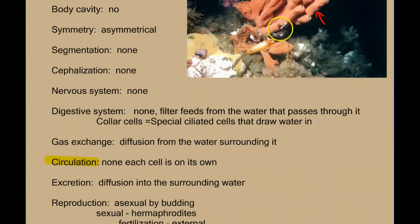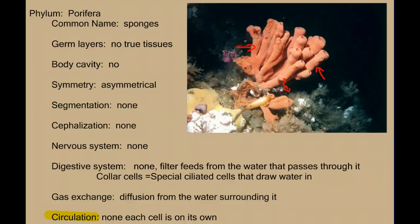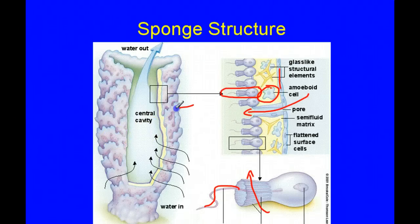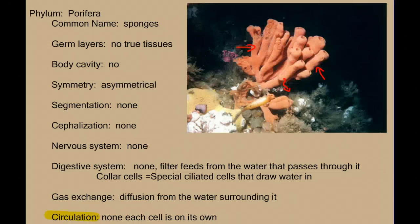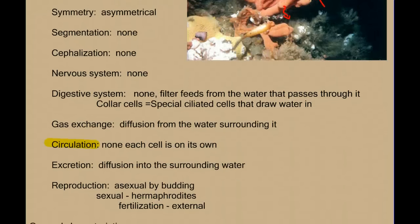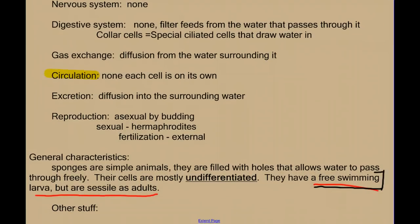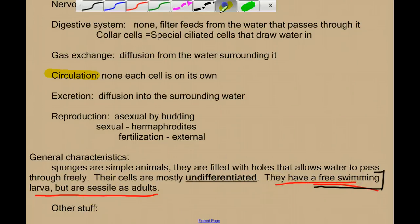So we have here a very simple animal. All of its metabolic waste can just diffuse out of the animal into the water, and all of the gas exchange also occurs by diffusion in and out of these cells as they contact with the water. We know that all animals are motile at some point, and the sponges are no different. They have a free-swimming larva stage, but they're sessile as adults.